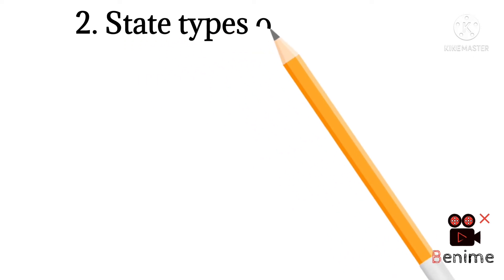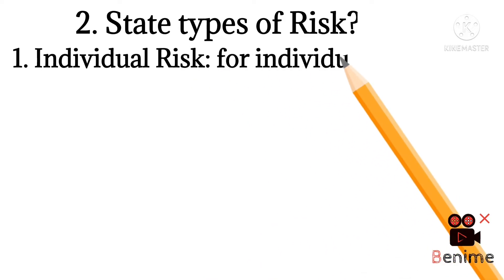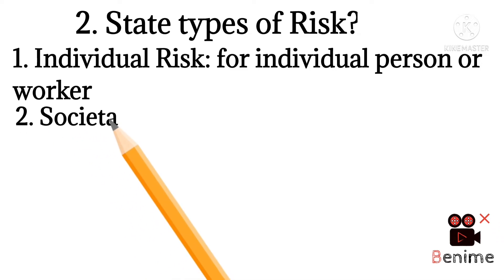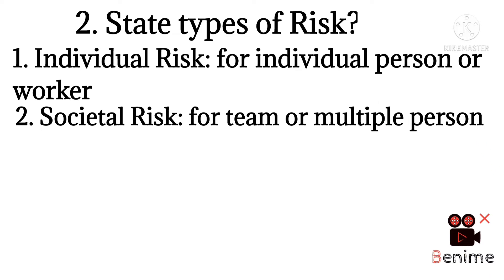Question number two: state types of risk. There are five types of risk. First, individual risk — this is the level of risk for any individual person or worker. Second, societal risk — this risk or hazard level has multiple consequences for society or for multiple persons or a team.